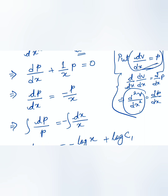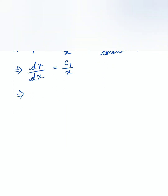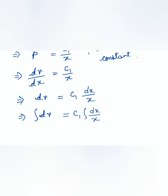Substituting back p = dv/dx, we get dv/dx = c₁/x. Integrating both sides: ∫dv = c₁∫dx/x, giving v = c₁ log x + c₂, where c₂ is an arbitrary constant.